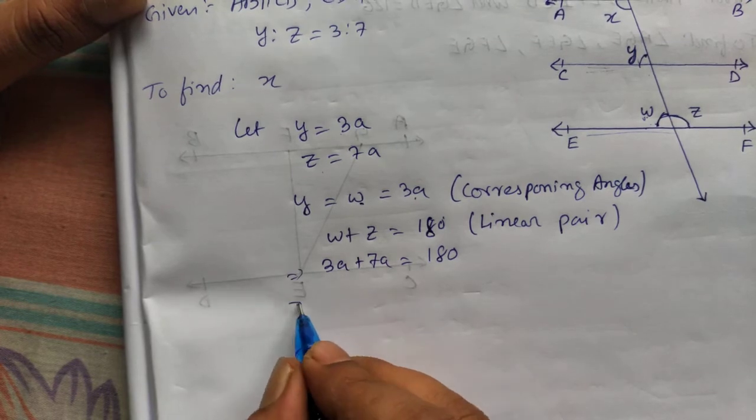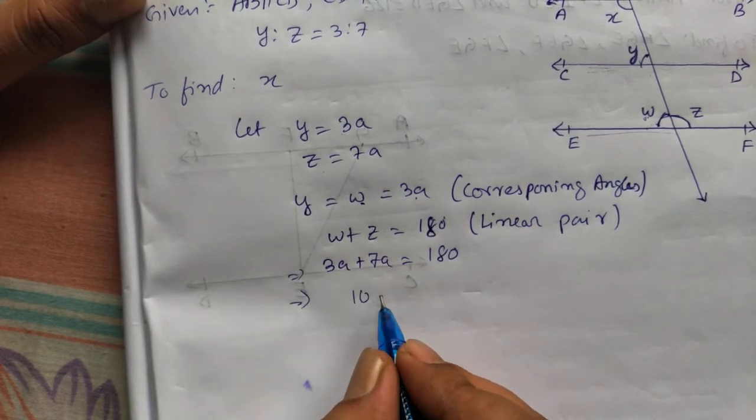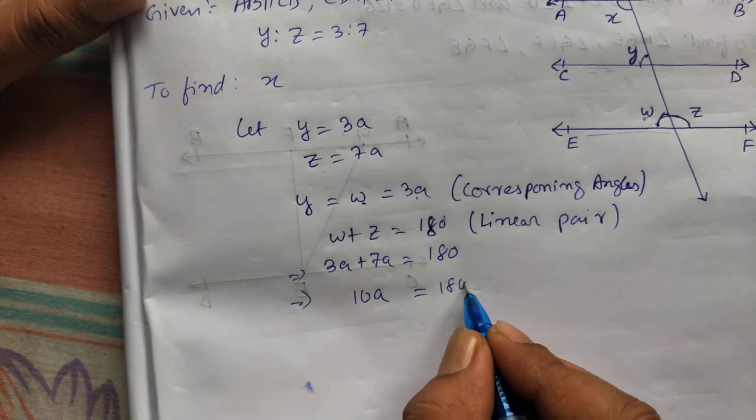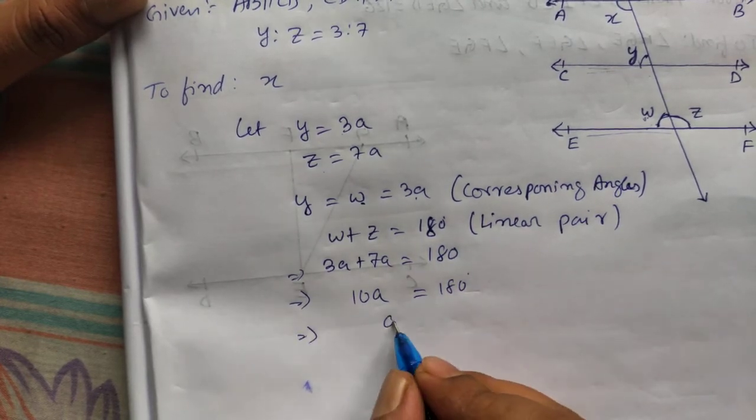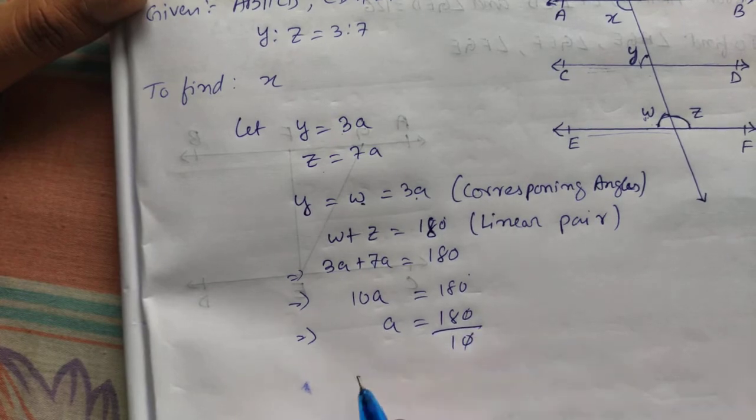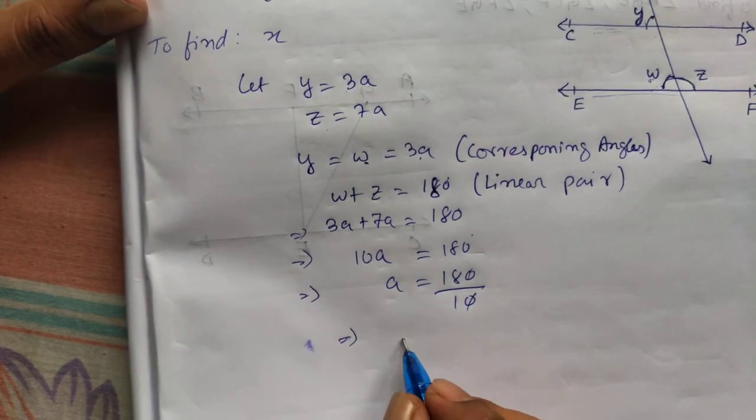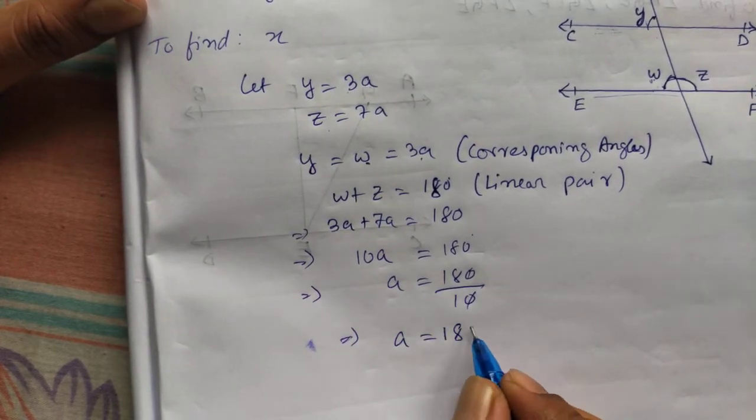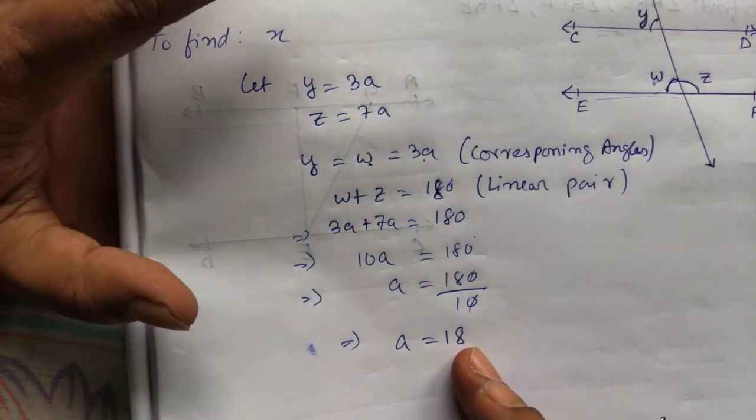3a plus 7a will be 10a, which is equal to 180. Now find the value of a. a is 180 by 10. 0, 0 cancel. a is 18. Once we get a, we can find y and z.